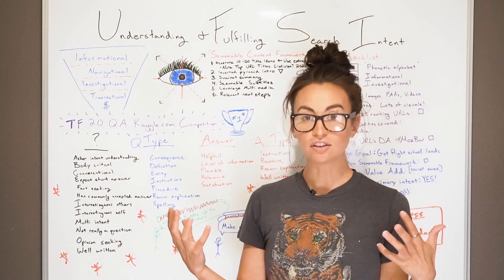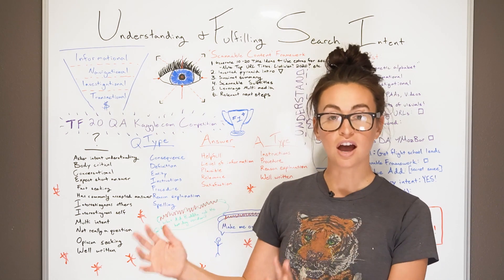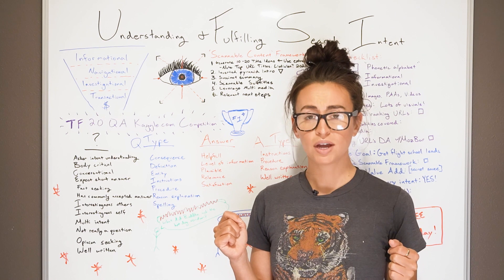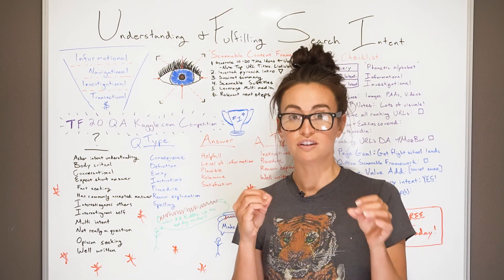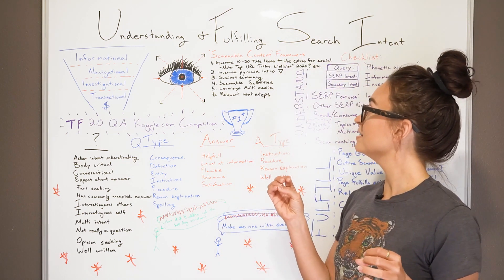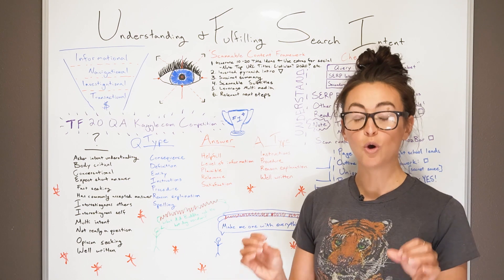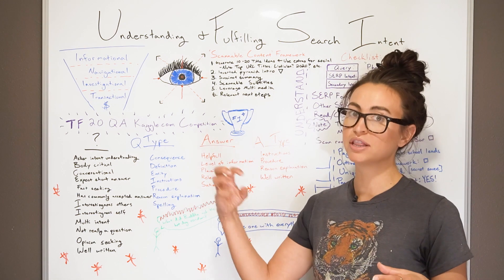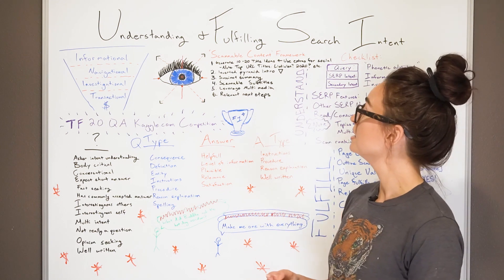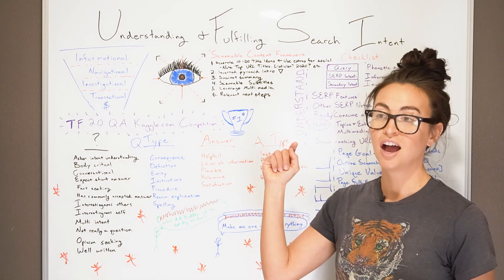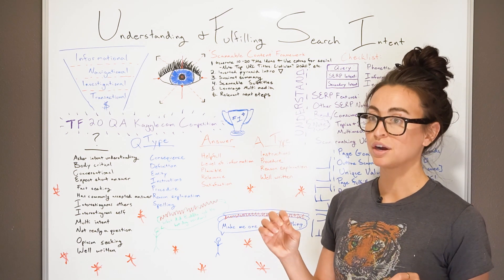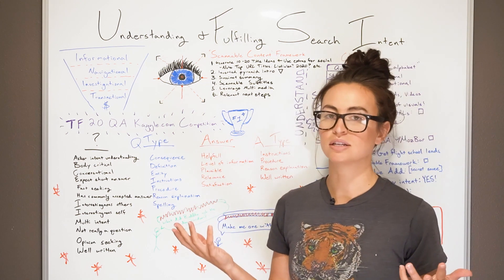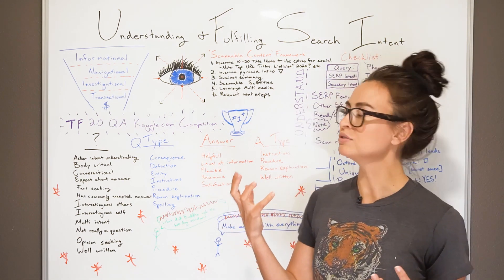Generate multiple title ideas to come up with the best one, and then use the others for social media — shout out to Andy Crestadino who came up with that. Use the inverted pyramid — the journalistic style where you tell people the most important information at the top. Make sure you have succinct summaries and omit needless words, whether at the top or bottom of your content. Google loves pulling that information for things like featured snippets. Make sure you have scannable subtitles — Copyblogger does this beautifully, where you can scan one of their articles and quickly understand what the content is about.